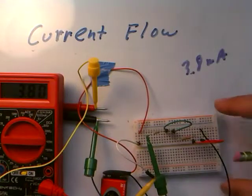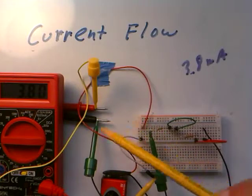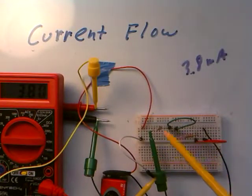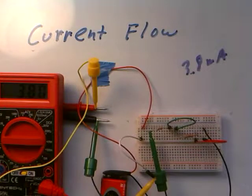You can interpret that current in many different ways because it's the current that's coming out of the battery. That appears to be the current that the whole circuit's drawing. Or it could just be the current that the first resistor is consuming.